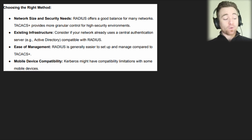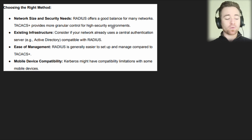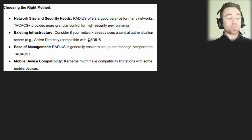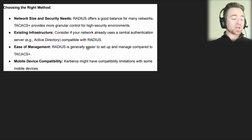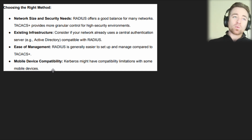How do you know which authentication method to choose for your infrastructure? Consider your network size and security needs: RADIUS is a good balance for many networks, while TACACS+ provides more granular control for high-security environments. RADIUS is highly scalable and simpler to set up relatively speaking, whereas TACACS+ is more difficult to configure but offers that extra granular control. Also consider existing infrastructure — if your network already uses a central authentication server it'll likely be compatible with RADIUS. Radius is generally easier to set up and manage. Note that Kerberos may have compatibility limitations with some mobile devices, as it's typically suited for wired networks.